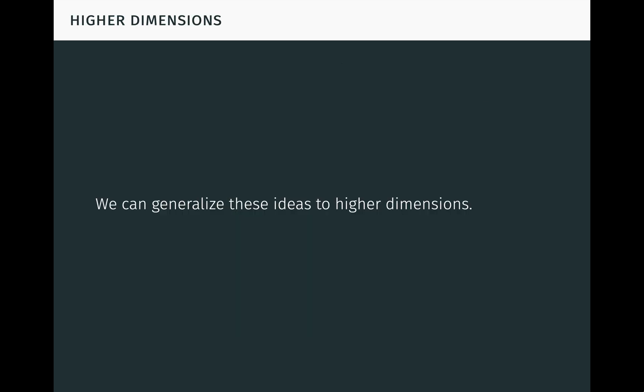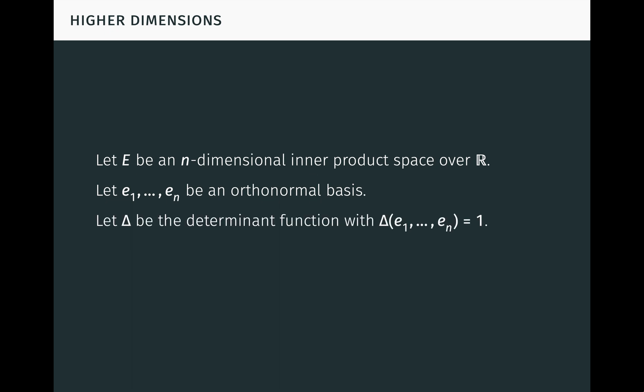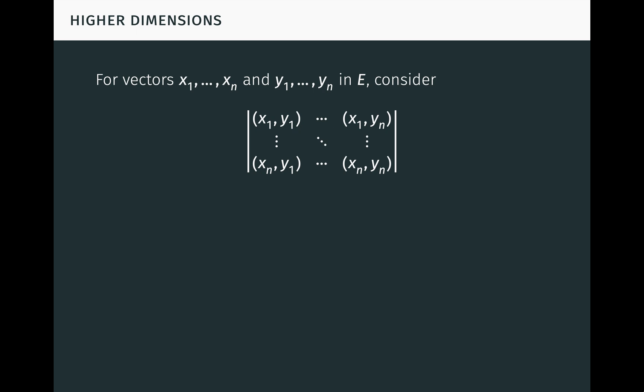We can generalize these ideas to higher dimensions. Let E be an n-dimensional inner product space over R. Let e1 to en be an orthonormal basis in E. Let delta be the determinant function on E with delta of e1 to en equal to one. Delta is called normal because its value on an orthonormal basis has absolute value one. This is true if and only if its value on any orthonormal basis has absolute value one, as you can verify. So normality just amounts to assigning the unsigned volume of one to any unit n-cube, which is a very natural condition. For two sets of vectors x1 to xn and y1 to yn in E, consider the determinant consisting of the inner products of the x's and the y's, seen here.